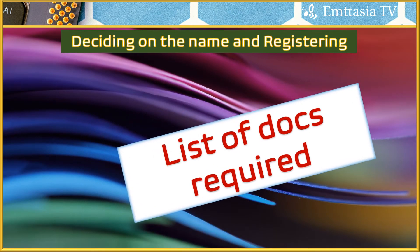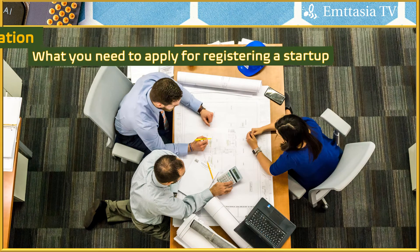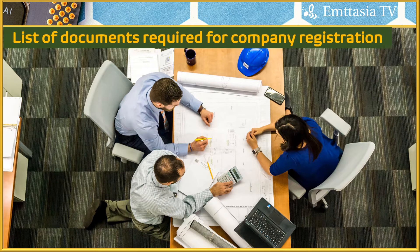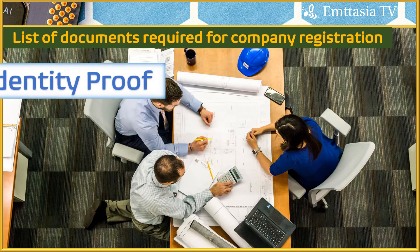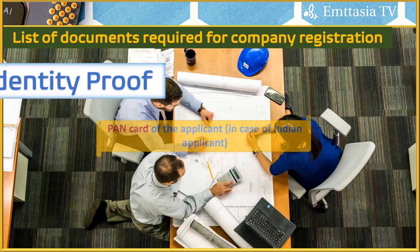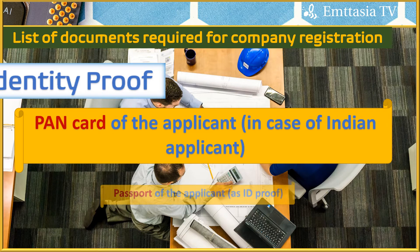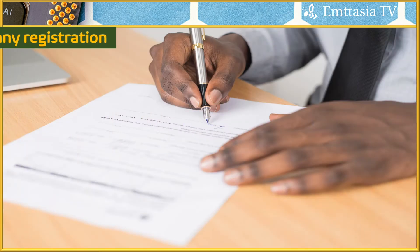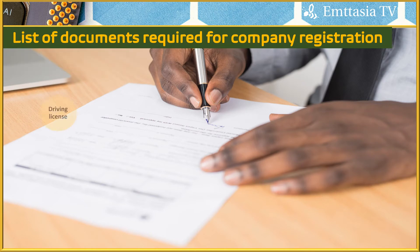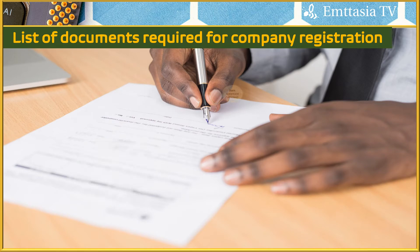Now let's look at the list of documents required to register a company. Don't worry if you don't have some documents — they can be obtained. For example, a digital certificate can be applied for, and the MOA and AOA can be prepared. You need a PAN card for both directors, a passport as ID proof, and address proof such as a driving license, voter's ID card, utility bills not older than two months, or a bank statement, which must be attested.